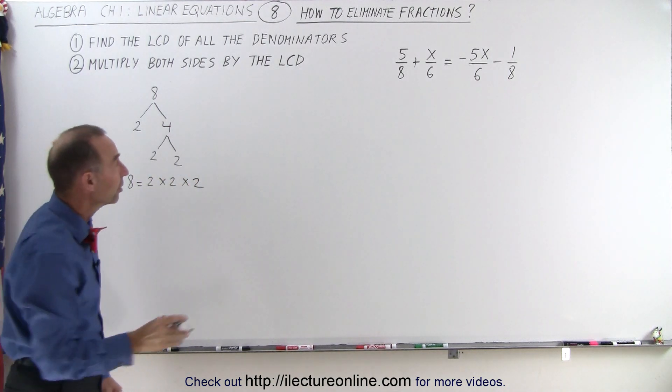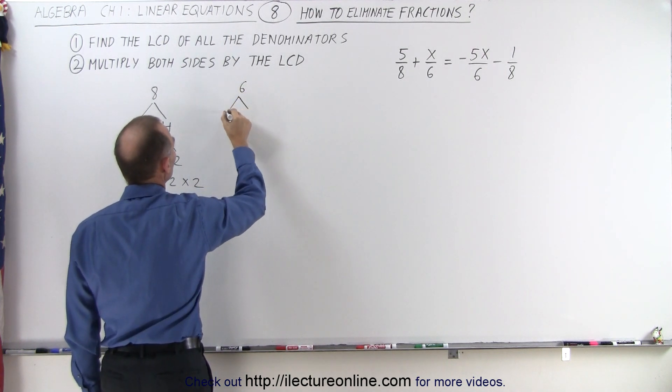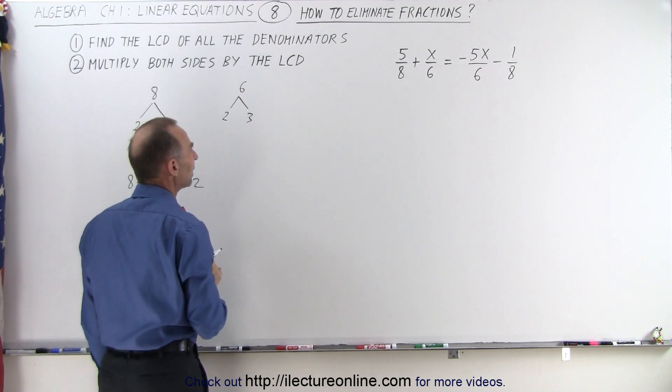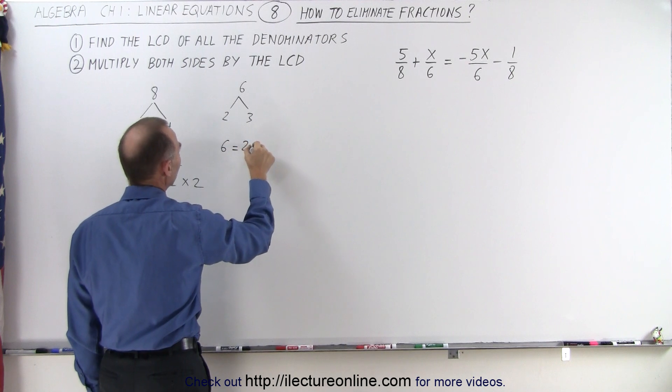We do the same for the other denominator. 6 can be subdivided, it can be divided by 2, and we end up with 2 times 3, which can no longer be divided any further. So essentially, 6 is equal to 2 times 3.